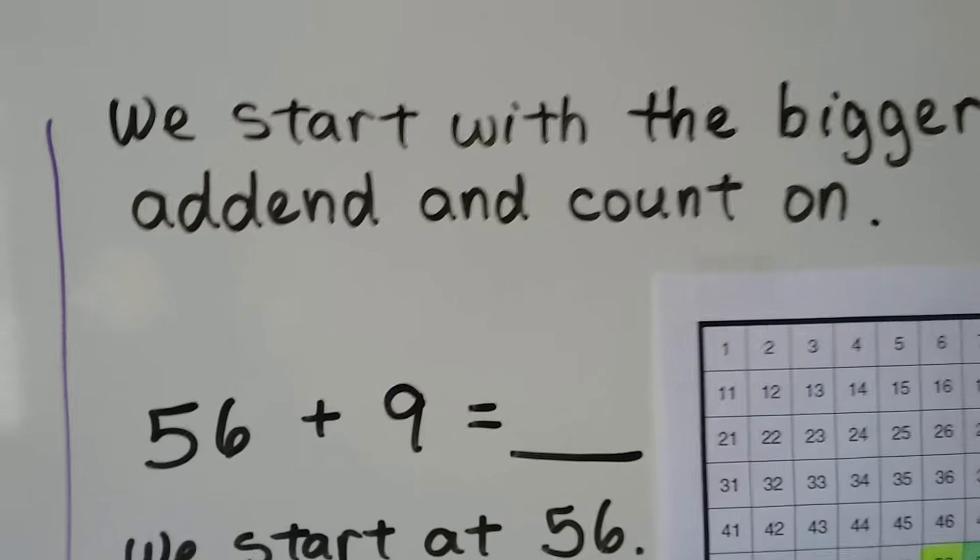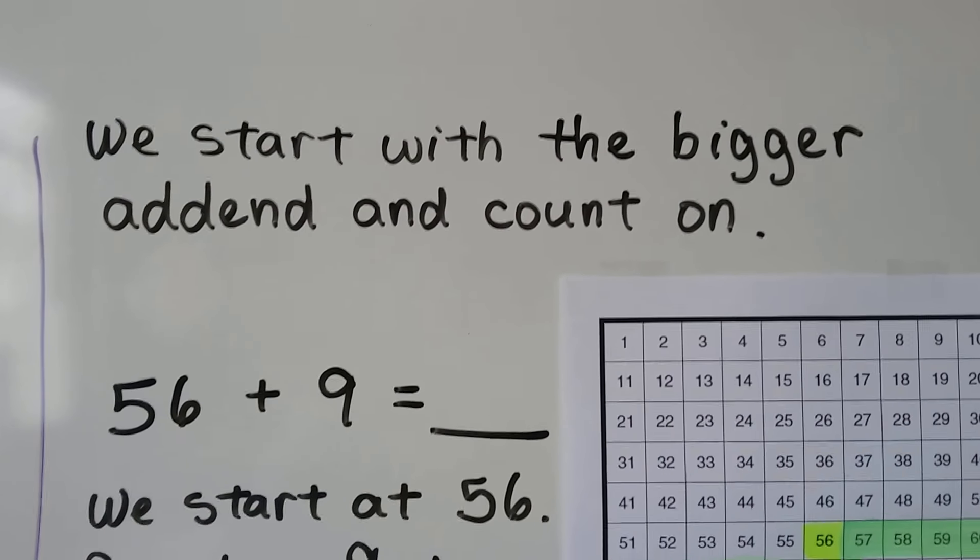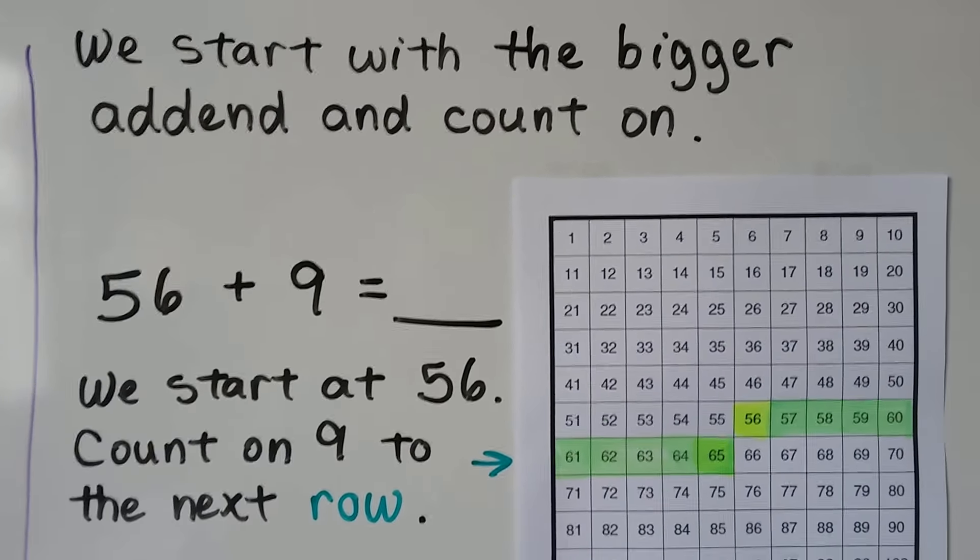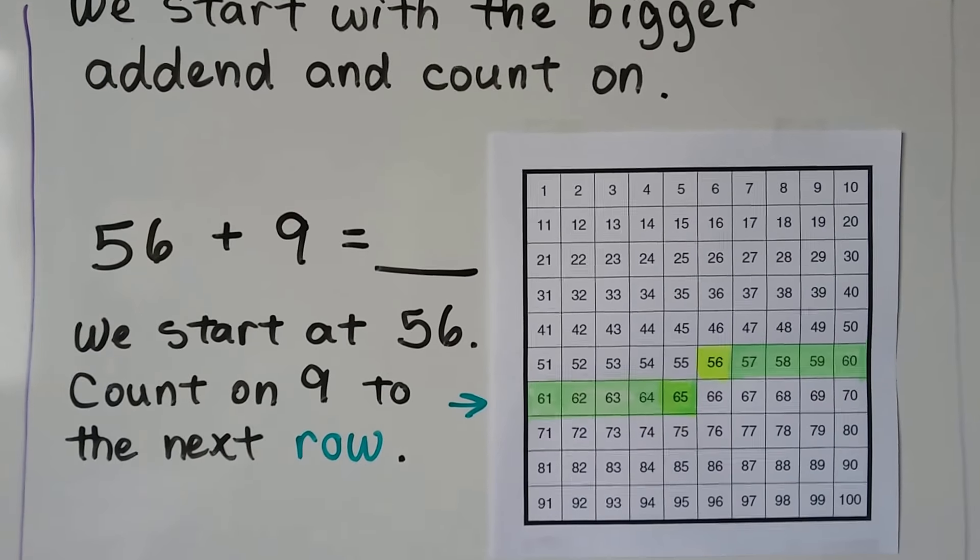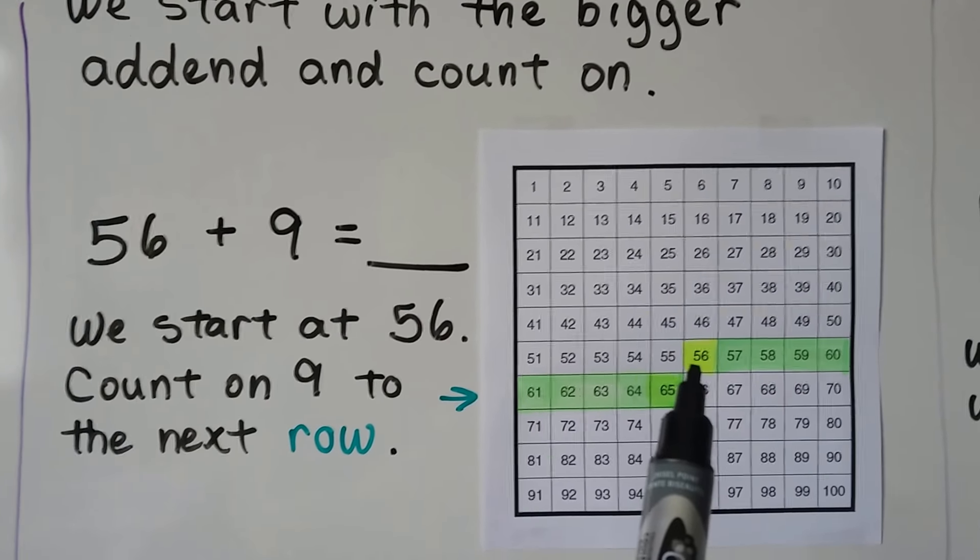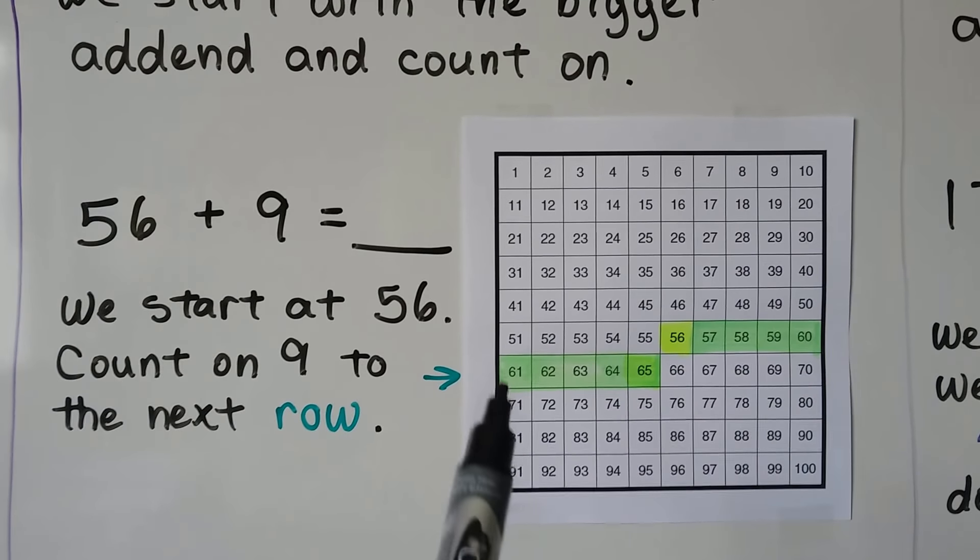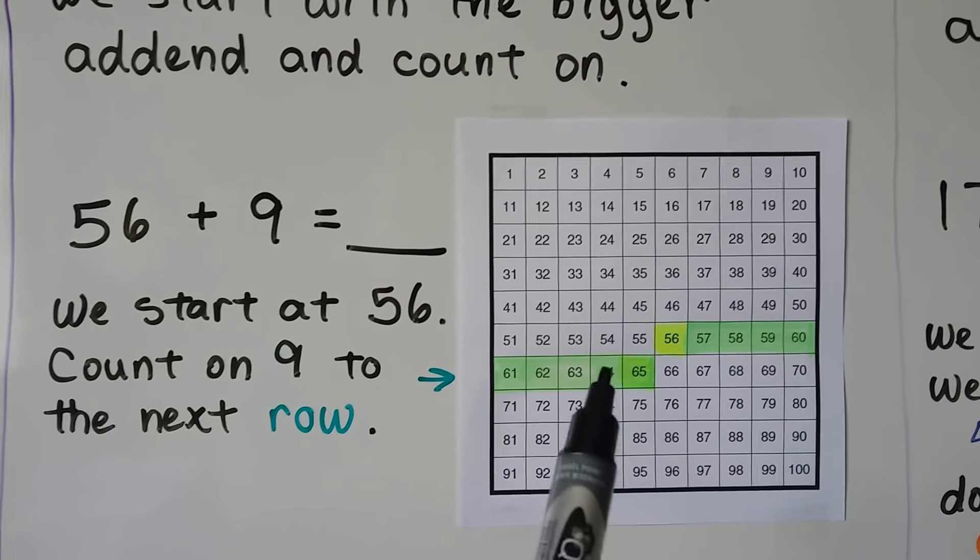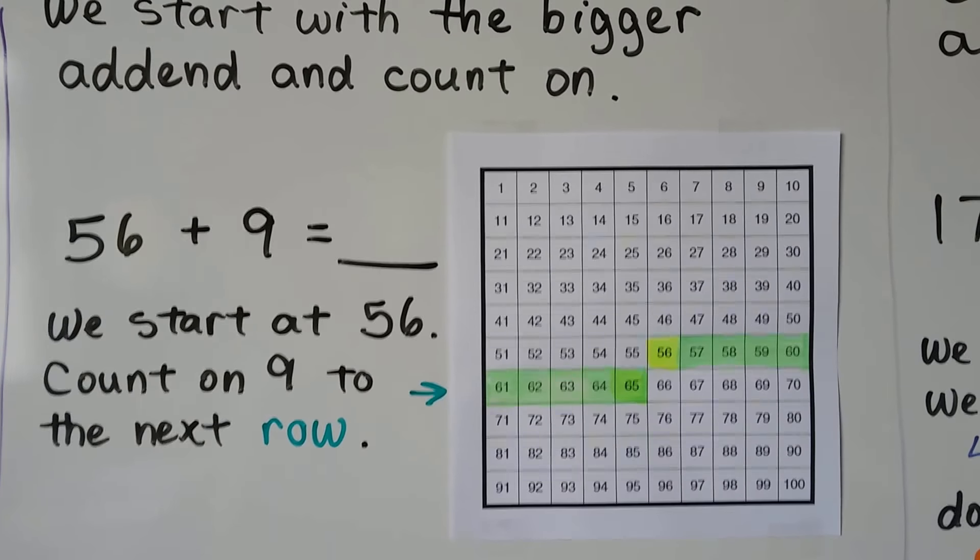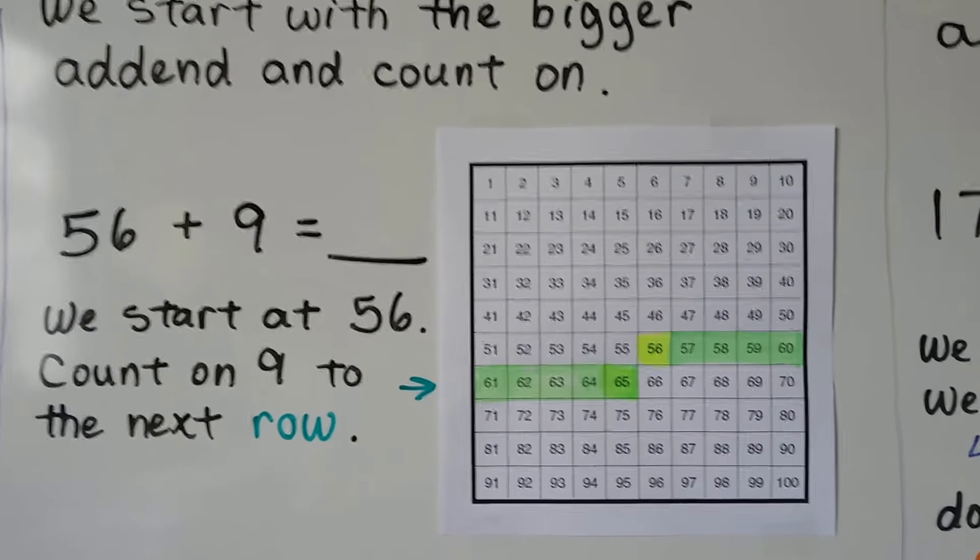We start with the bigger addend and count on. 56 plus 9. We start at 56. Count on 9 to the next row. 1, 2, 3, 4, 5, 6, 7, 8, 9. 56 plus 9 is equal to 65.